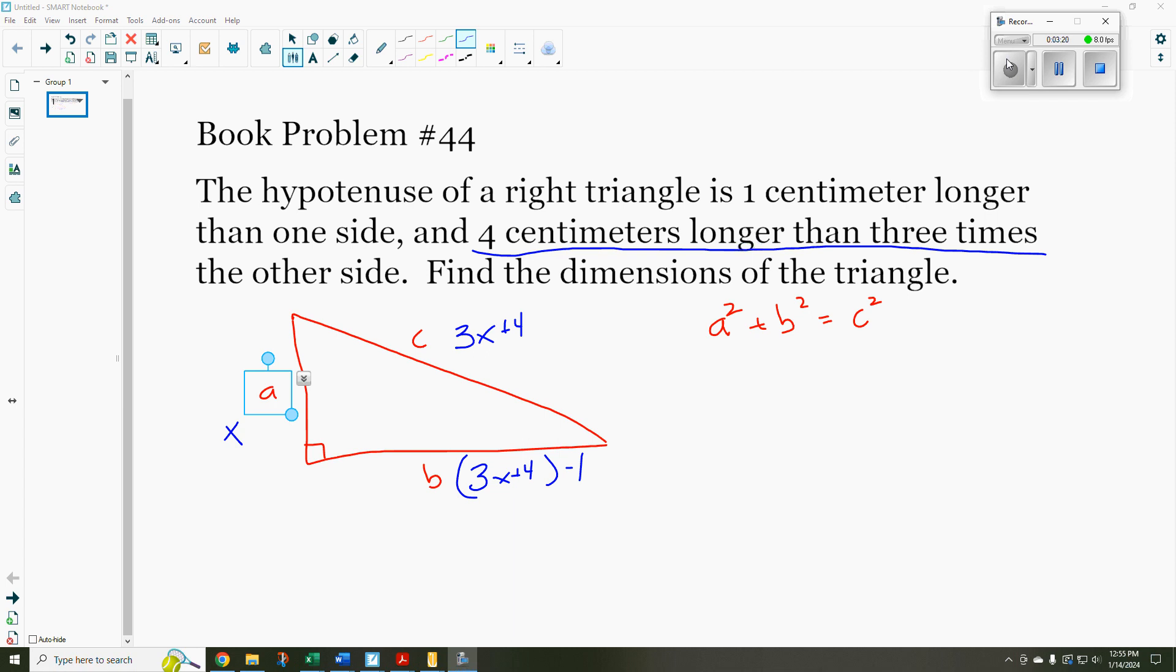I know A squared plus B squared equals C squared. So A squared, that is x squared, plus B squared. Well, B is three x minus three because I have the four minus one squared is equal to three x plus four squared. Let's kind of go over to the side a little bit here. So I want to know what is three x minus three squared.